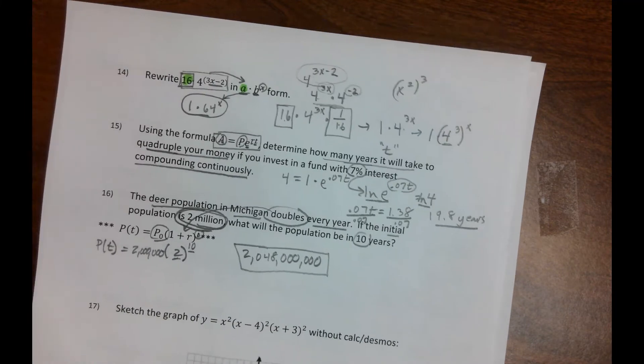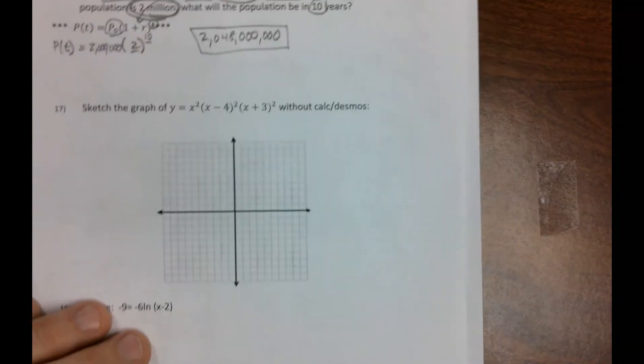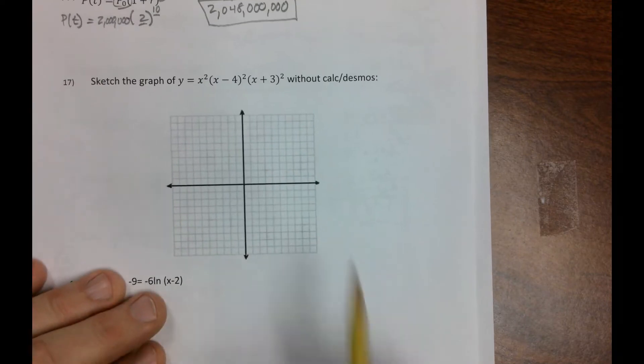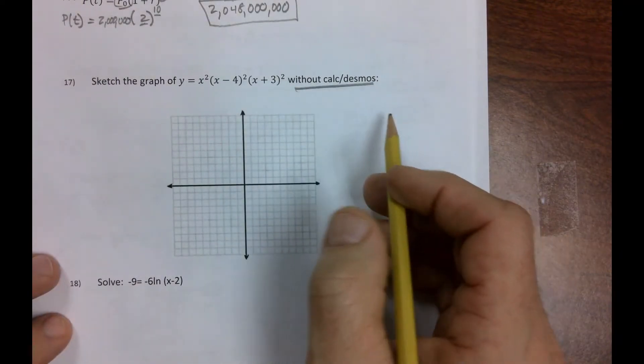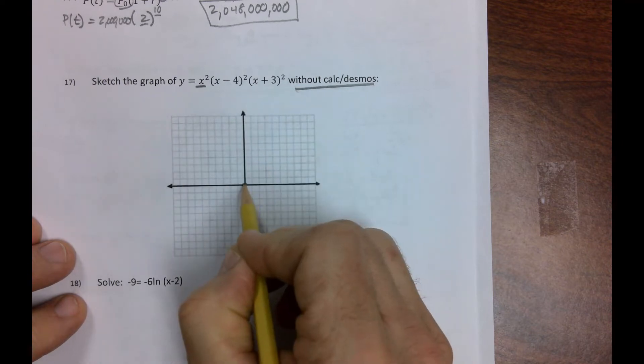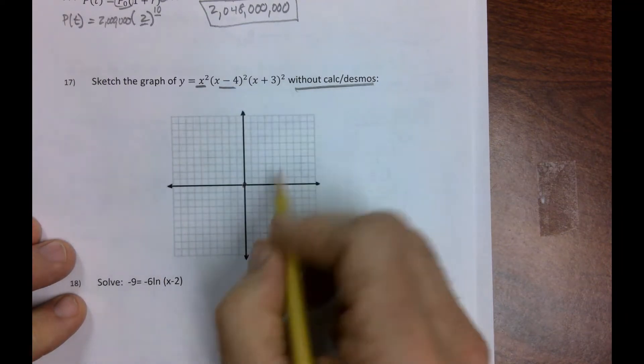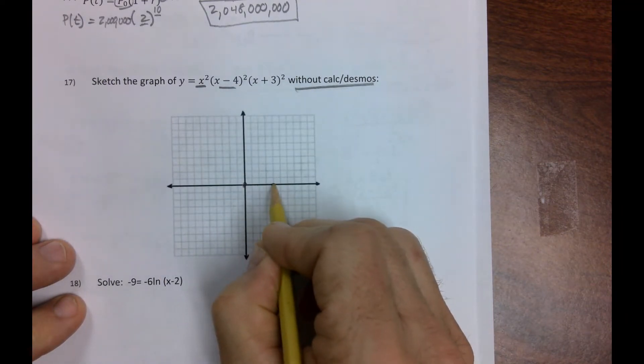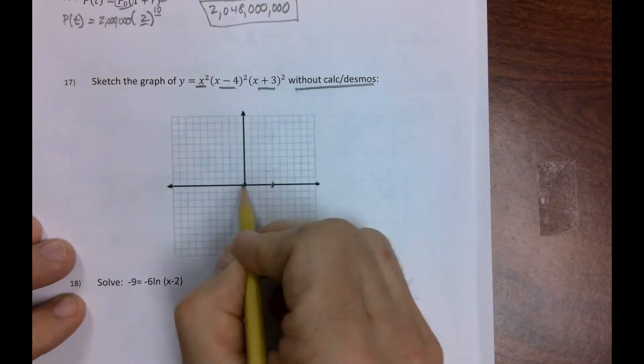Okay, number 17. Sketch the graph without calculator or decimals. So here we go. This is a 0. 4 is a 0. Negative 3 is a 0.